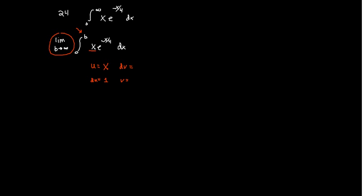dv is e to the negative x over 4 and to find v you have to take the integral of that. I can do that pretty well in my head. It's going to become negative 4e to the negative x over 4.